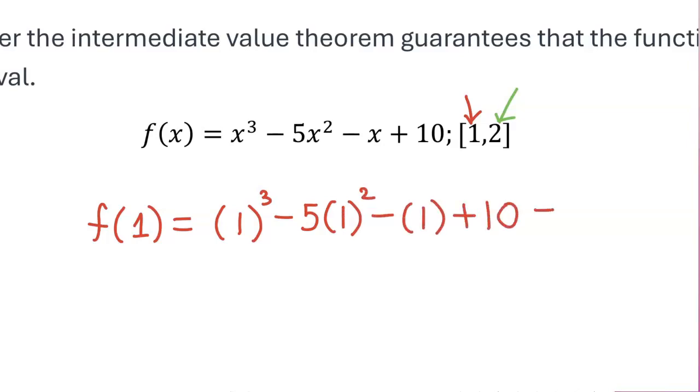Now I'm going to set both of these up and go to the calculator and evaluate both of these. But now let's plug in the second endpoint of 2. So if you plug in 2 into this function you get 2 cubed minus 5 times 2 squared minus 2 plus 10.